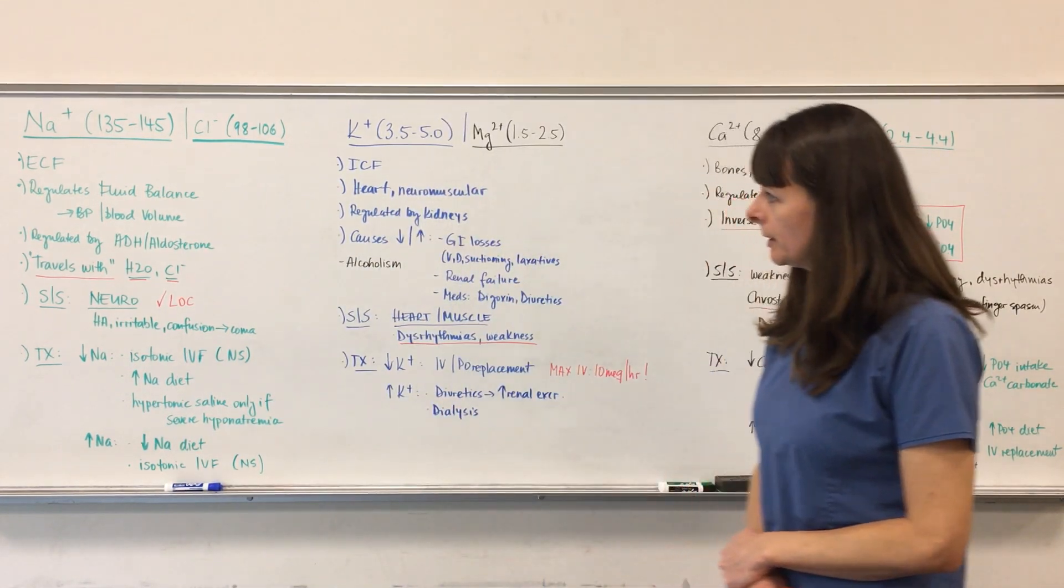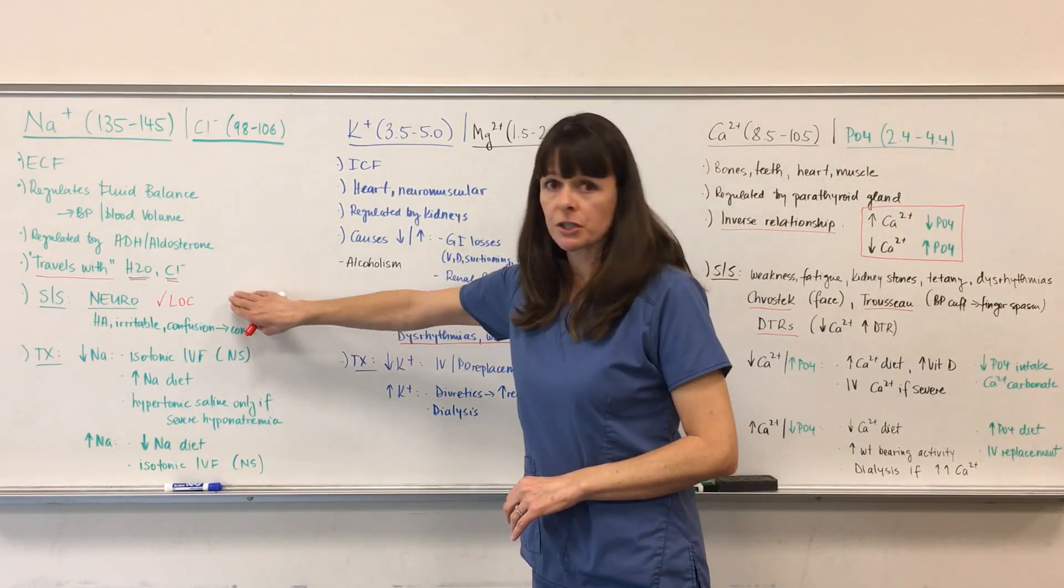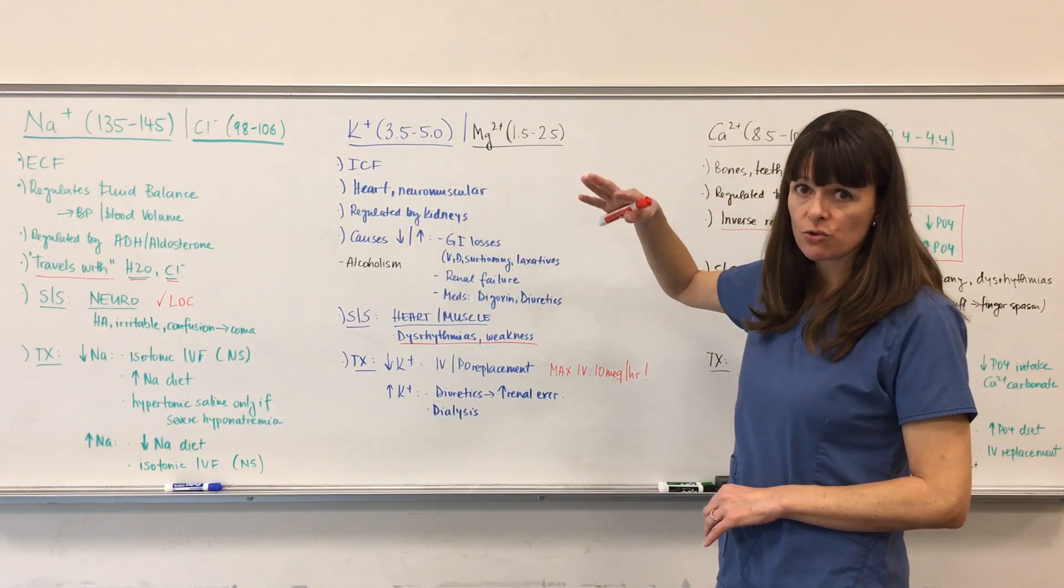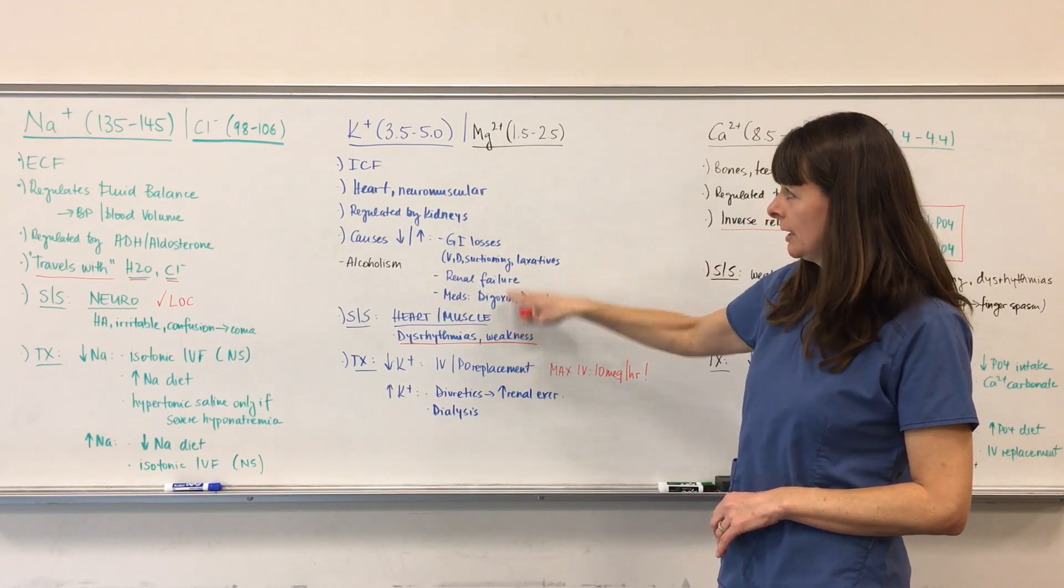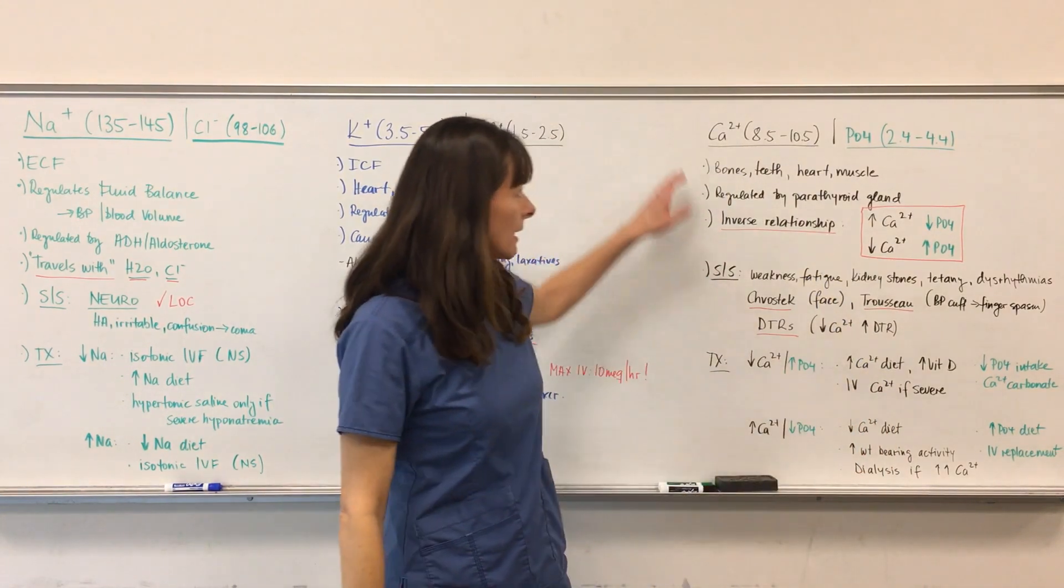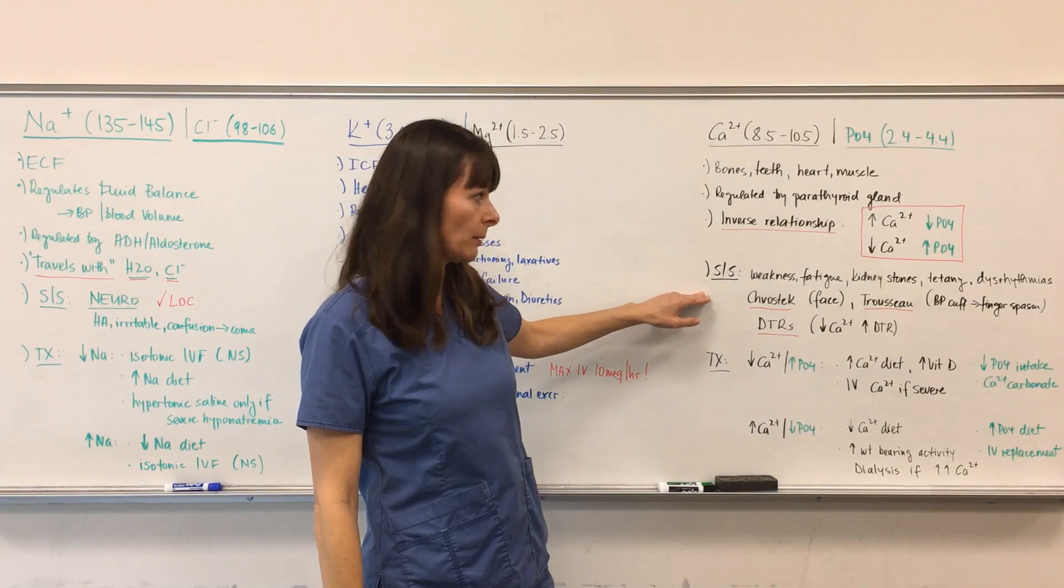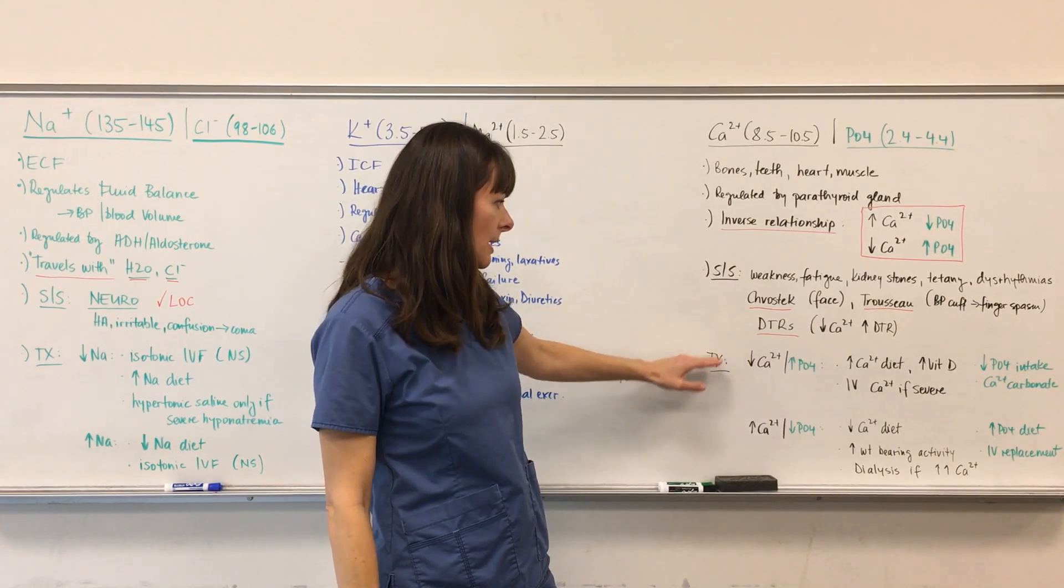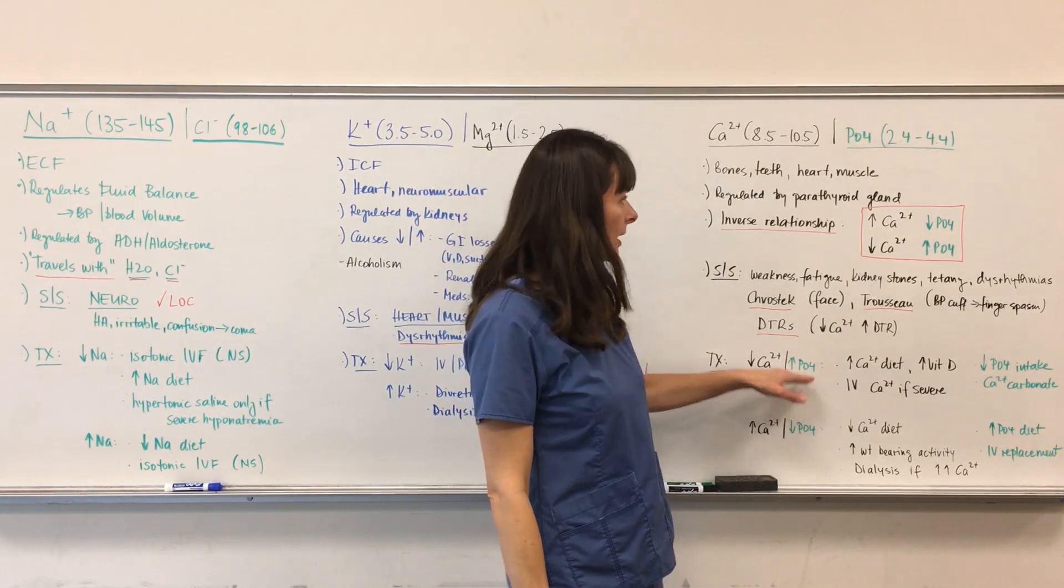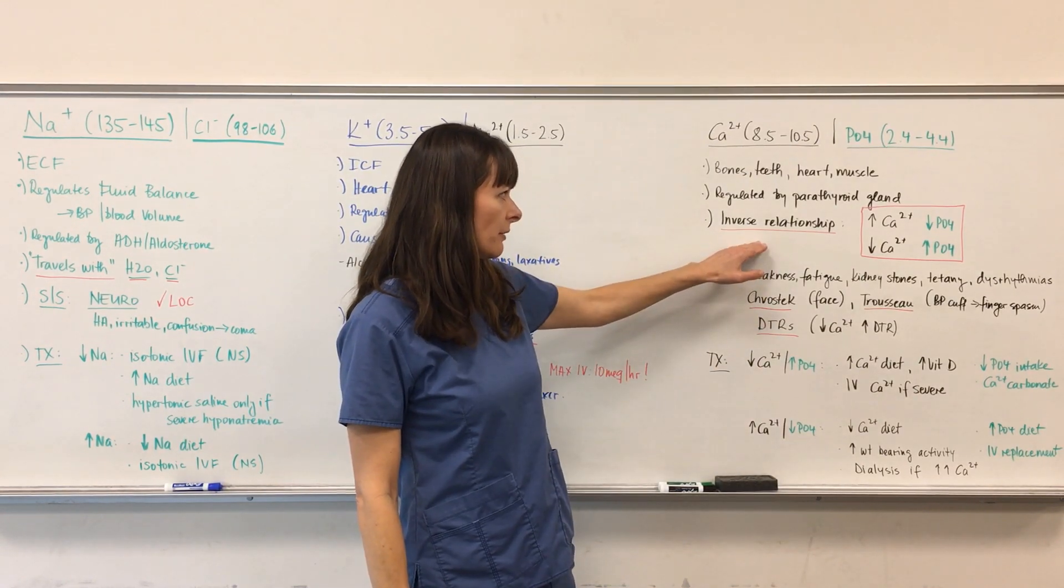In summary, sodium and chloride travel together, think neurological changes in the patient. Potassium and magnesium always travel together, think heart and muscle. Magnesium specifically, think alcoholism. Calcium and phosphate have this inverse relationship. Chvostek and Trousseau signs apply, as well as deep tendon reflexes. Treatment for hypocalcemia is the same as for hyperphosphatemia, and same if they're high and low the other way because of this inverse relationship.